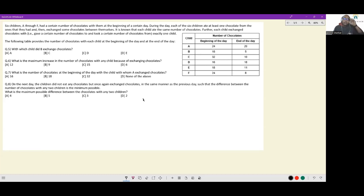Let's look at this set. Six children A through F had a certain number of chocolates with them at the beginning of the day. During the day, each of the six children ate at least one chocolate from the ones they had and then exchanged some chocolates between themselves. It is known that each child ate the same number of chocolates.